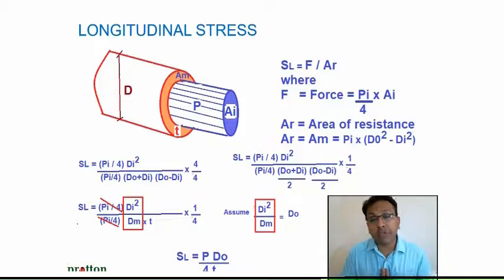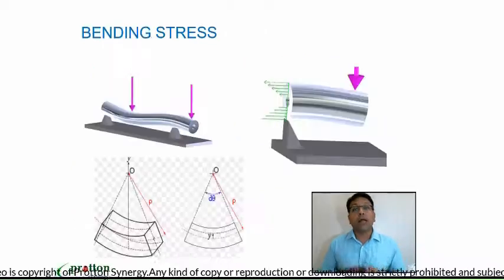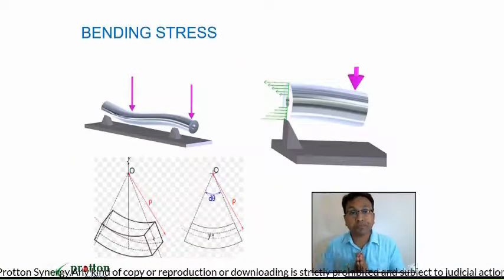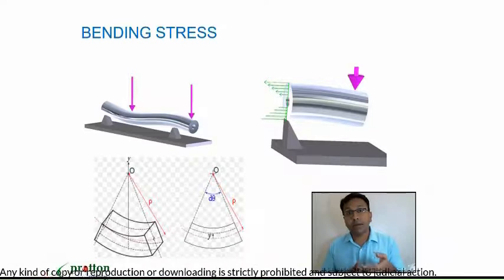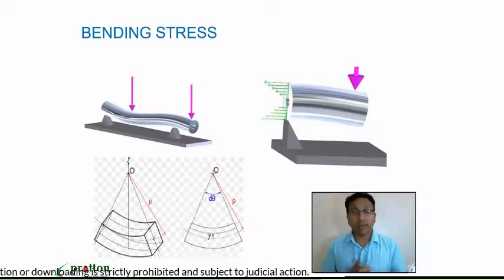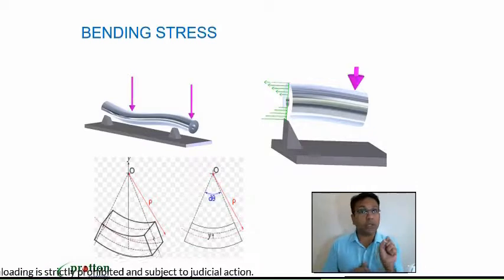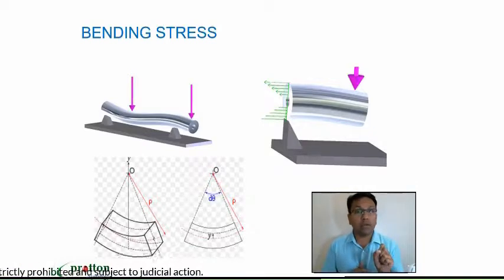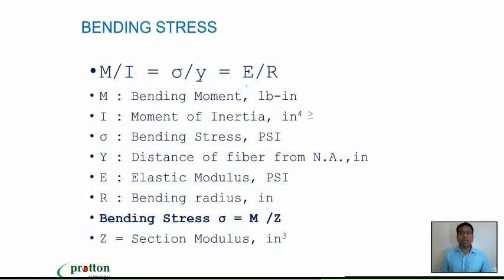Whether the longitudinal stress is half of hoop stress or twice of hoop stress. Now the question is: bending stress, is it a principal stress? Does it fall under a category of either longitudinal or circumferential or shear?